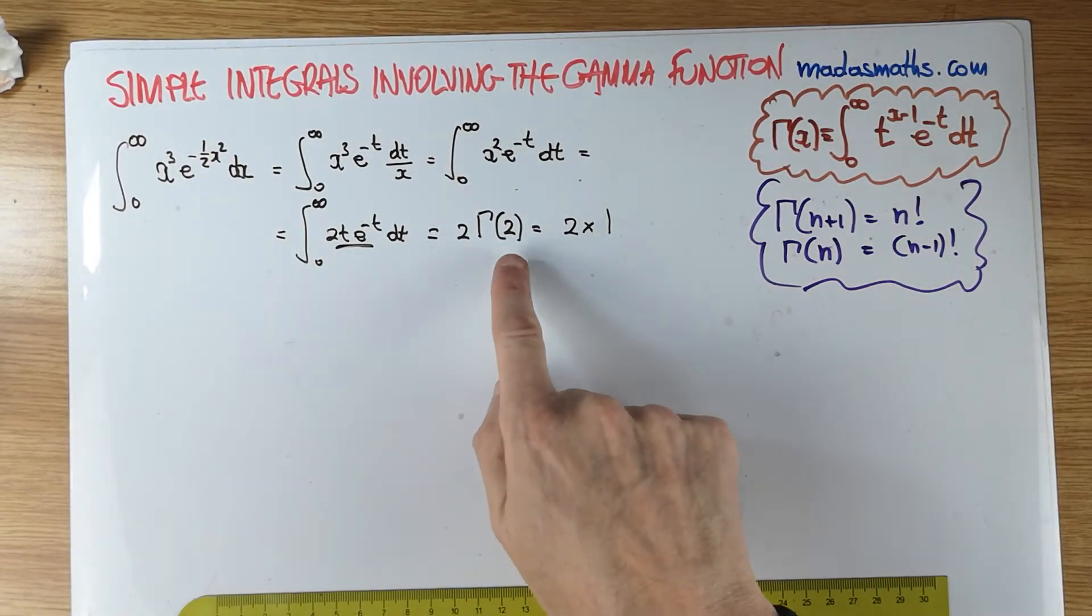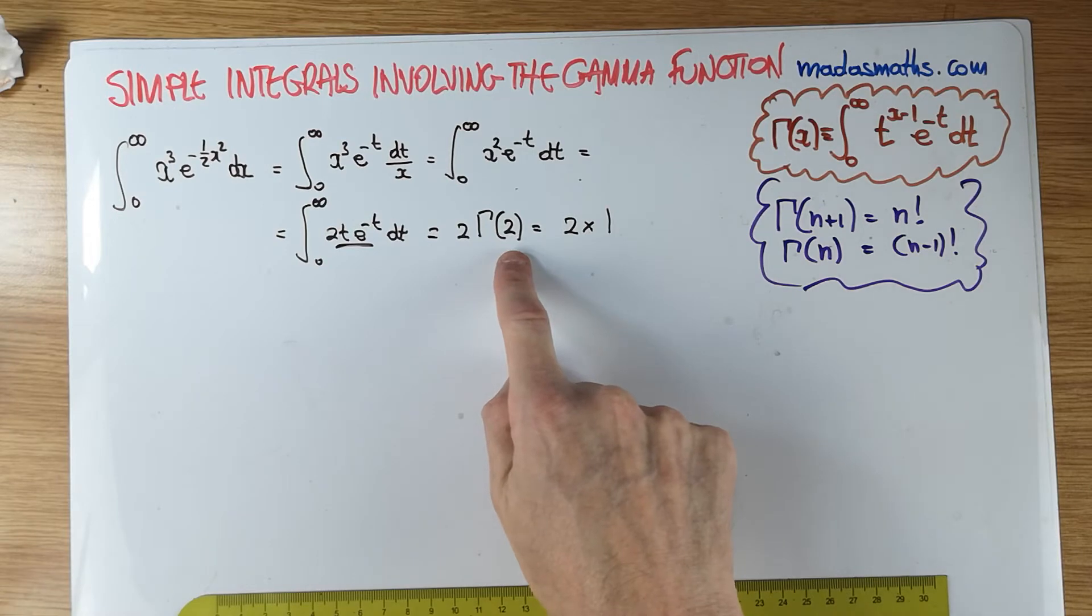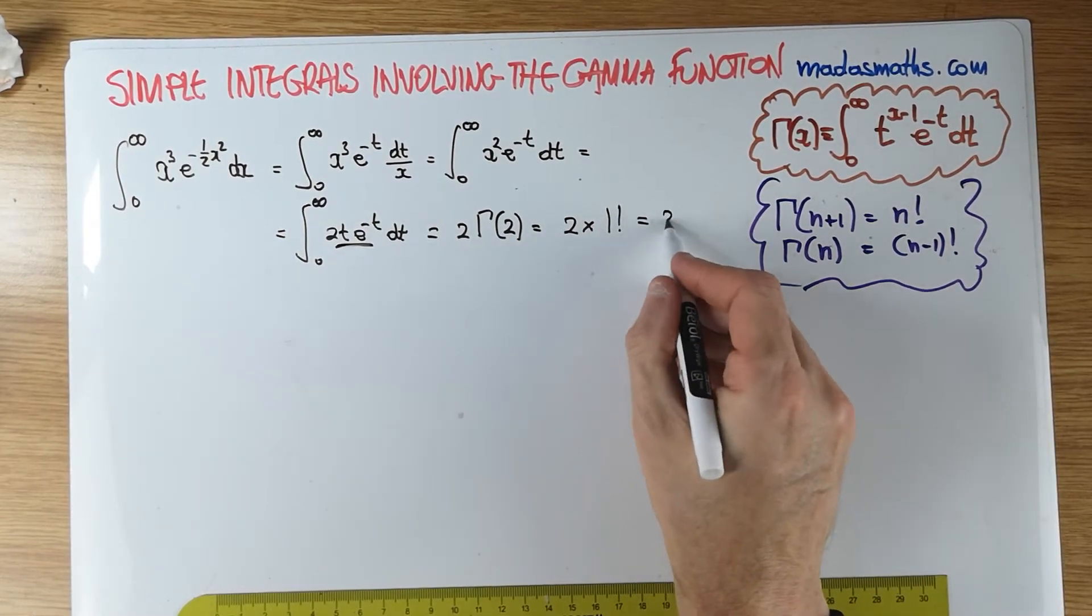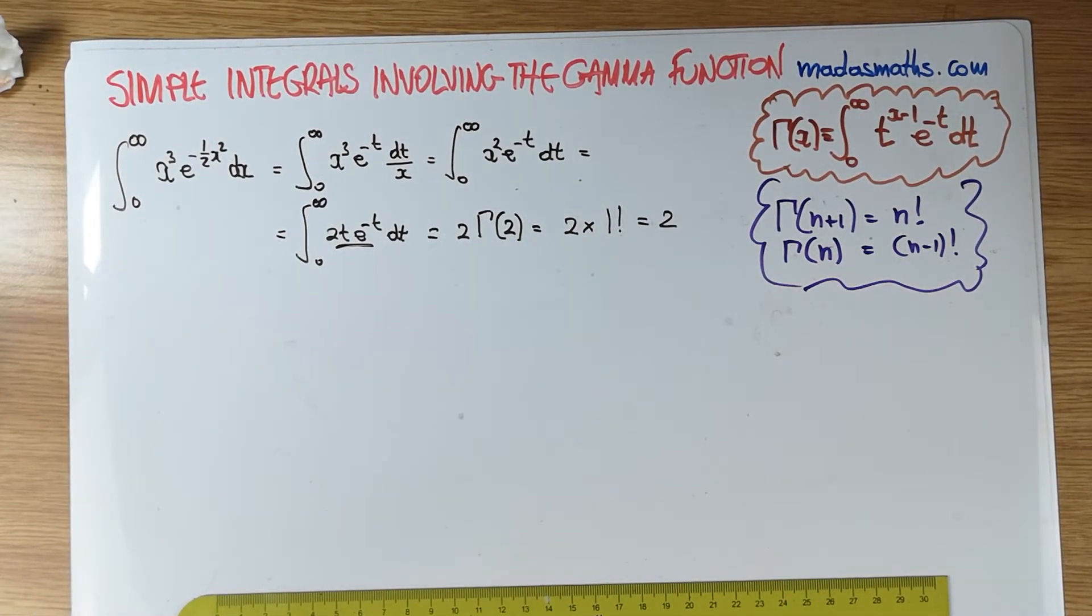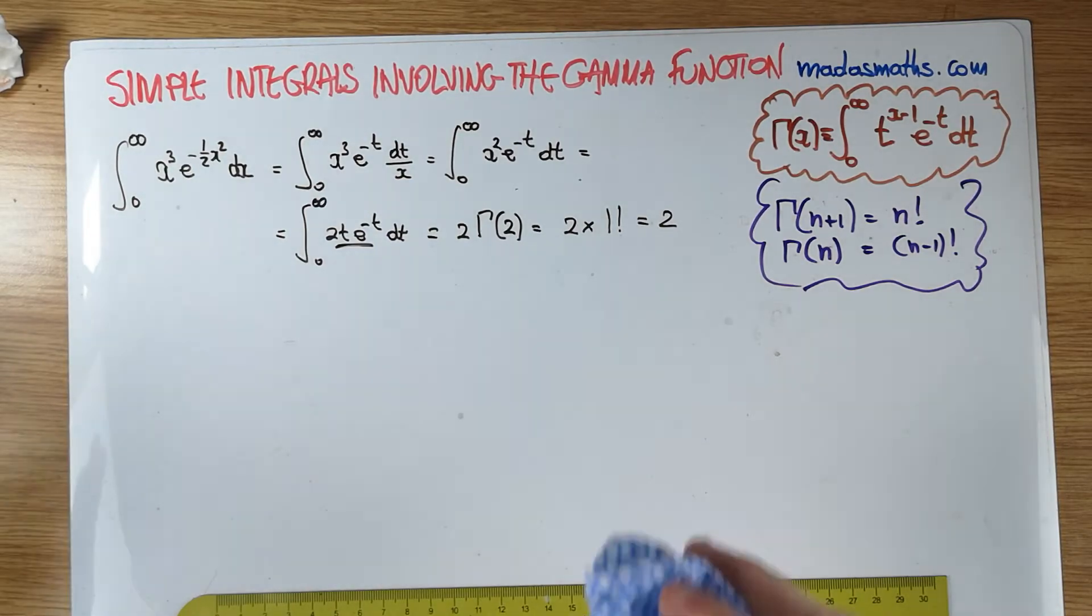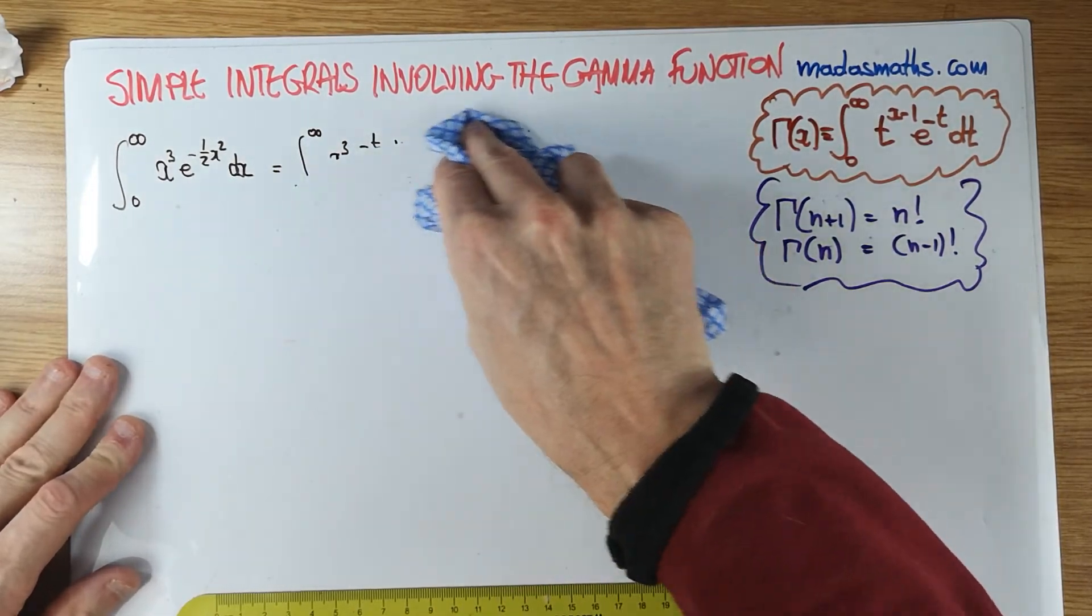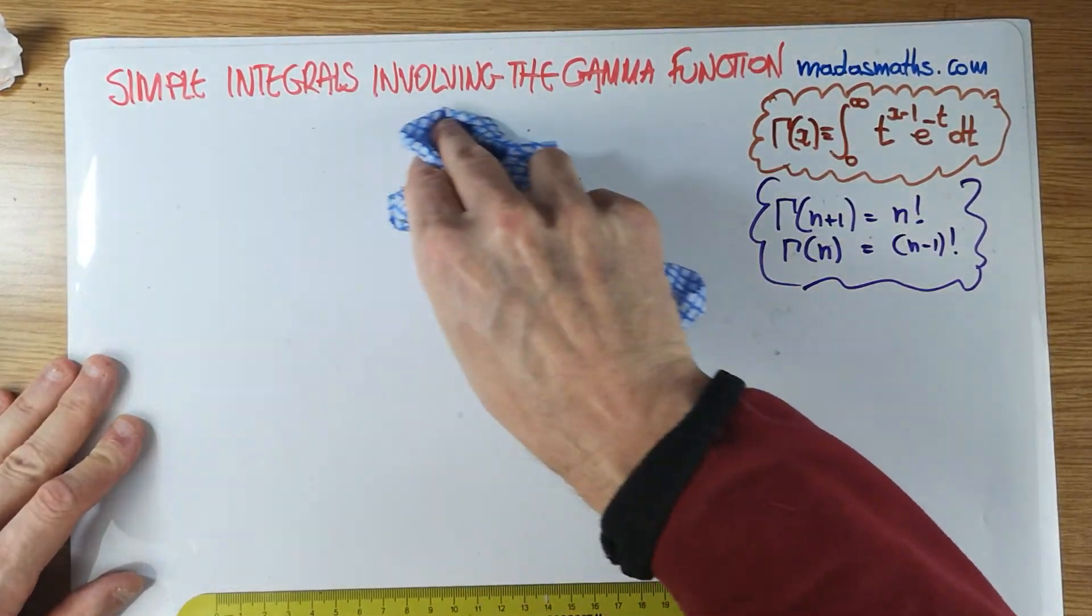So the gamma of 2 is in fact 1 factorial, which is 1, and therefore this integral is simply 2. Simple as that. So we're gonna look at another integral. Probably to do about 3 integrals today. That's more than enough just to give us a few ideas.